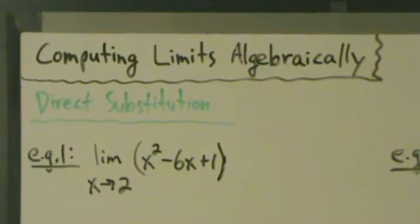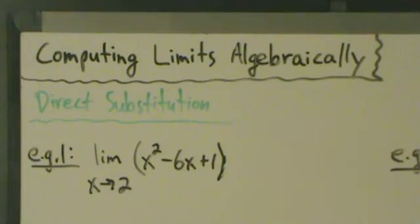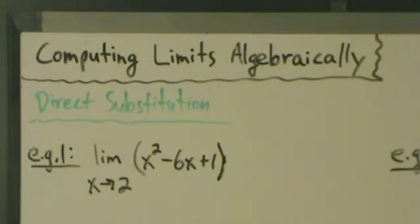For the next few videos we're going to be talking about computing limits algebraically, and in this video we're going to do direct substitution. Direct substitution is pretty much the simplest method that you can use to evaluate limits, but it won't always work. If it doesn't work, there are other things you'll need to try, and we'll talk about those in later videos. But it is always the first thing you should try because it is the simplest.